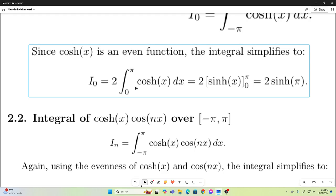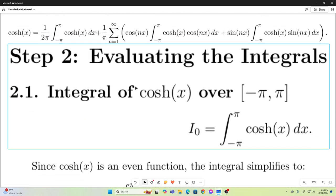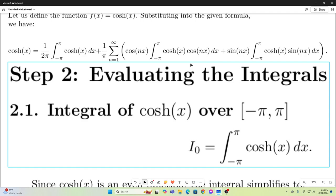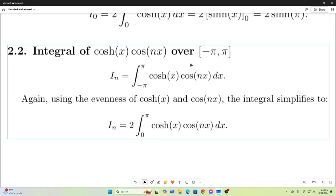Now the first thing we've got to realize is that that's an even function. So we can just get rid of the negative part and multiply the entire thing by two. And if you perform that integration, you will see that it evaluates to two hyperbolic sine of pi. So we can replace this with two hyperbolic sine of pi. Next, let's evaluate the next one.